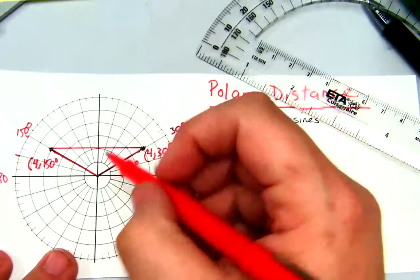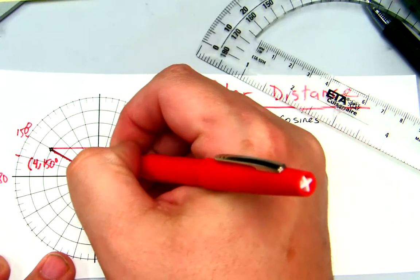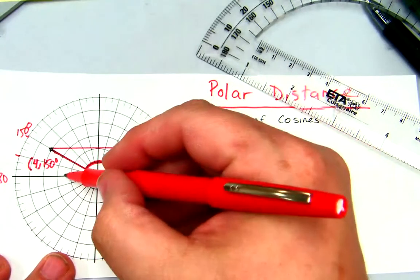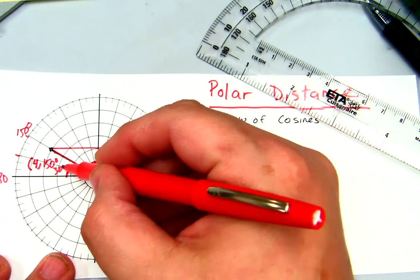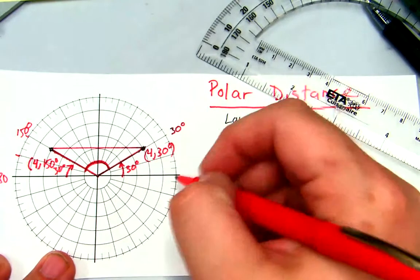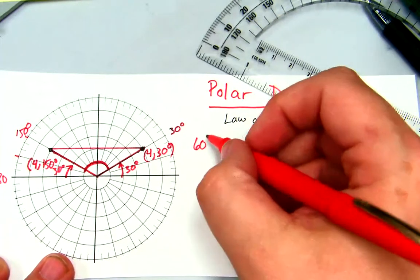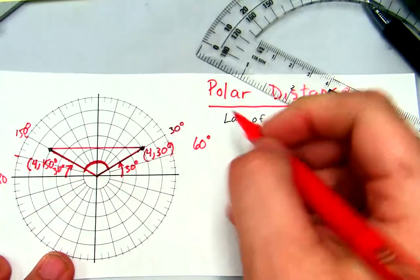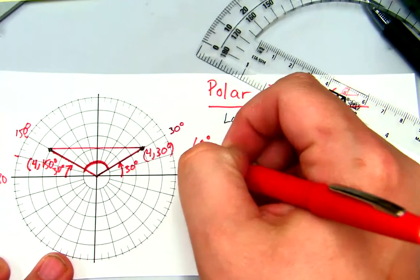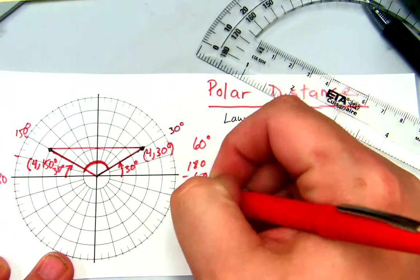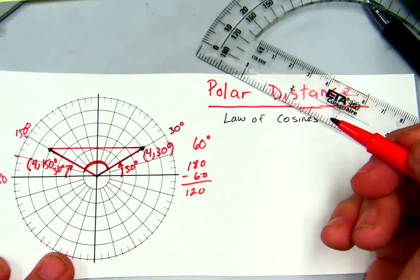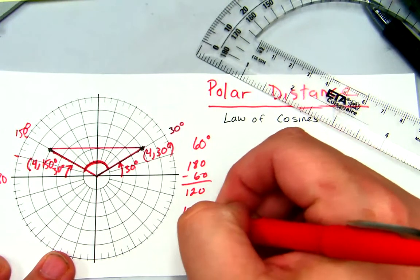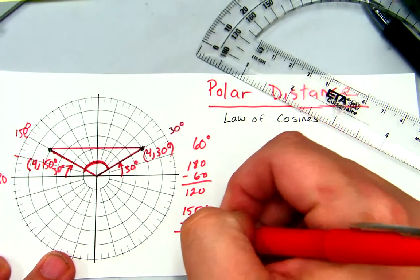What I need to know is this angle right here. I have 30 degrees here and 30 degrees here, so I have 60 degrees total that aren't taken up out of the 180. So I'm going to take 180 minus 60 and get 120 degrees. You could also take 150 minus 30 and get your 120 degrees.